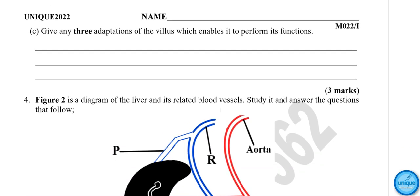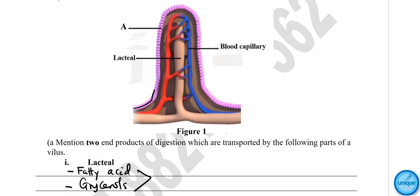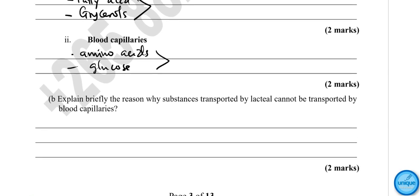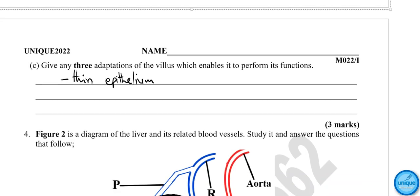Another question on page four: give three adaptations of the villus which enables it to perform its function. This one has thin epithelium. It has a thin epithelium for easy diffusion of food substances. As you can see on the diagram, it was supplied with a dense network of capillaries.